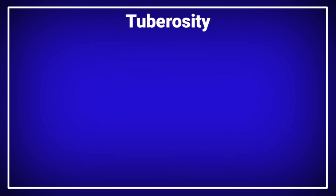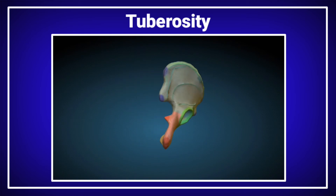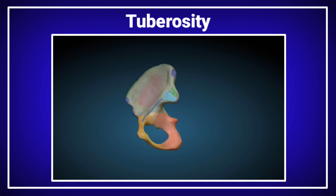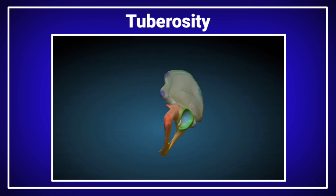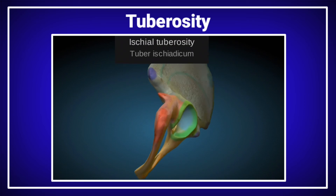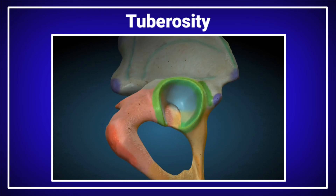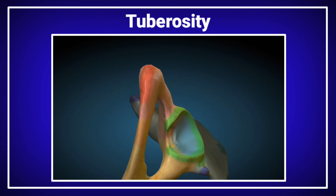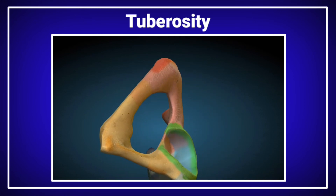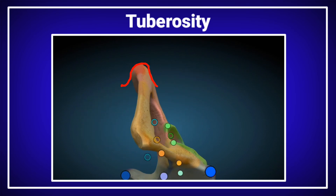The tuberosity — there are many tuberosities on different parts of the human body. We will discuss the tuberosity on the ischium part of the hip bone. The part inside the red circle, shown in red shading, is called the ischial tuberosity of the hip bone. The ischial tuberosity shows the rounded elevation.